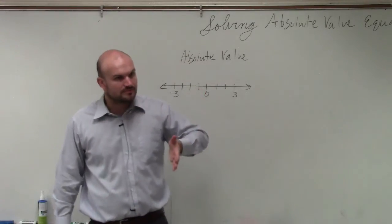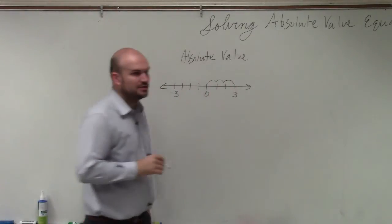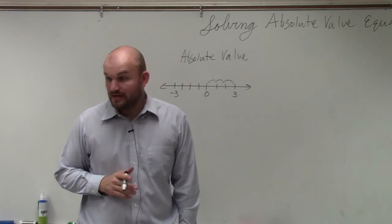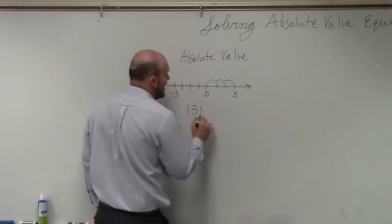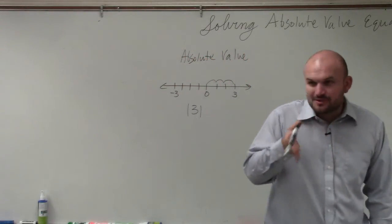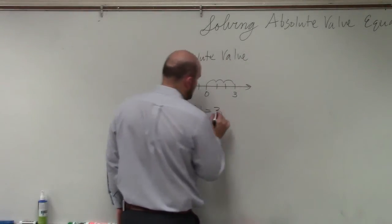Let's pretend you're at 0. If you travel three units to the right, how far did you actually travel? Three units, right? So we represent that with absolute value as the absolute value of 3. If you go from 0 to 3, the absolute distance that you traveled is equal to 3.